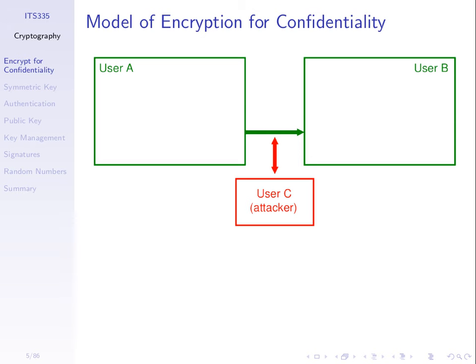We'll assume that user A's computing device generates the message and sends something to user B. We will assume that some other user, user C, who's performing an attack, can intercept anything sent between A and B. The interception may happen via a Wi-Fi attack, by getting a copy of a file, tapping into a wired link, or gaining access to an intermediate device like a router. Therefore, we can't send the original message between A and B because it will not be confidential.